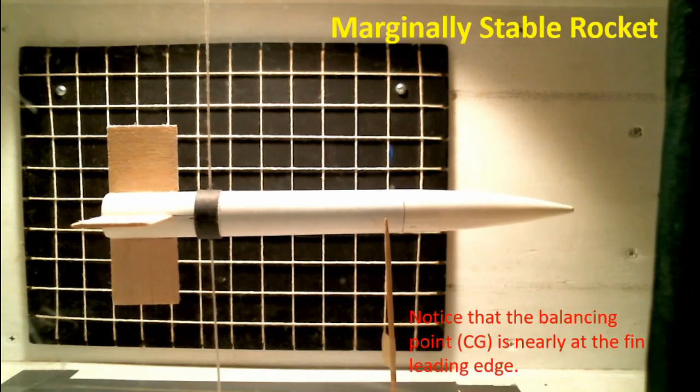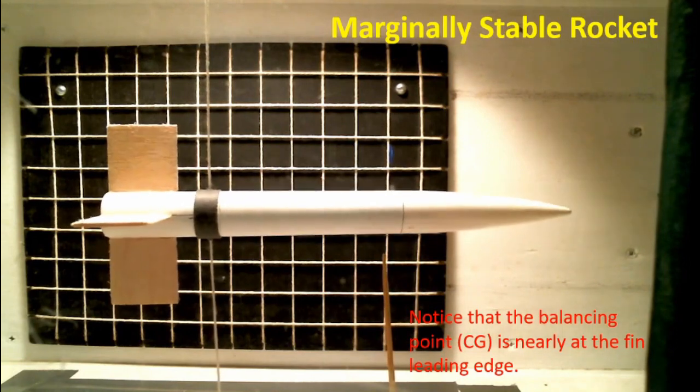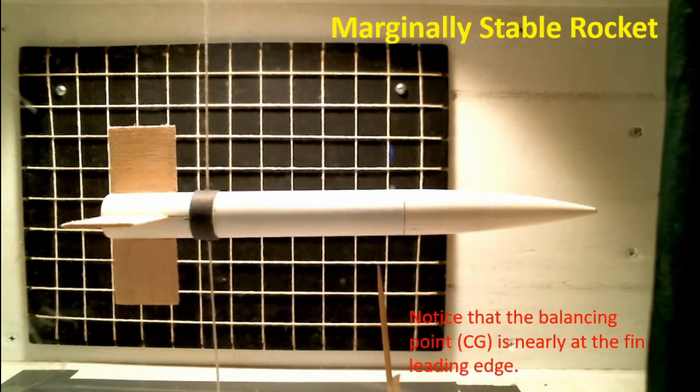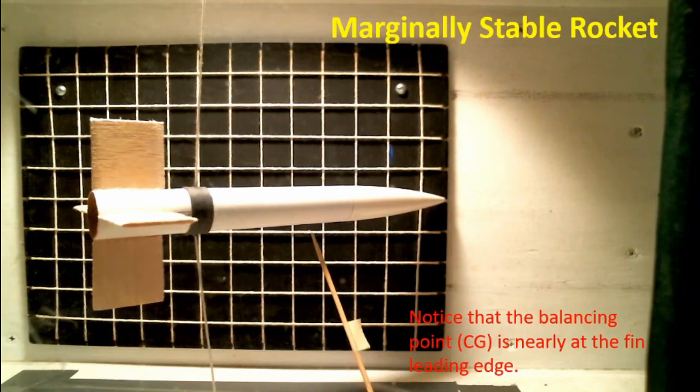The rocket is stable if the nose is pointed into the airflow and it can tolerate some perturbations, but eventually if the angle of attack gets too great, the rocket will go unstable and wants to try to fly backwards.